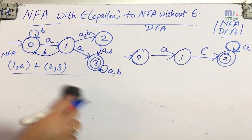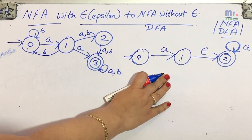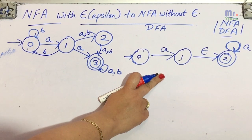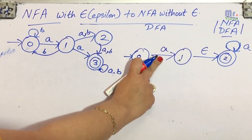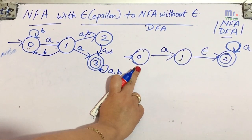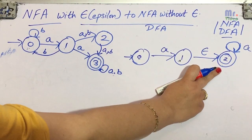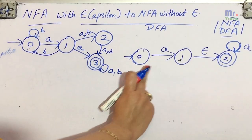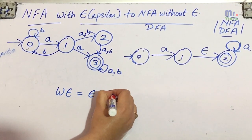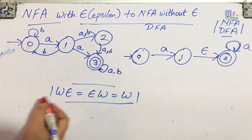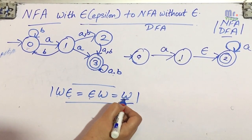There are two different types of NFAs: one is with epsilon moves and one is without epsilon moves. Now, as per the property of theory of automata, w·epsilon = epsilon·w = w. What this means is that if any string is followed by epsilon, or if any string is preceded by epsilon, it is exactly equal to the string itself.